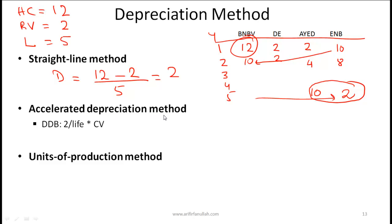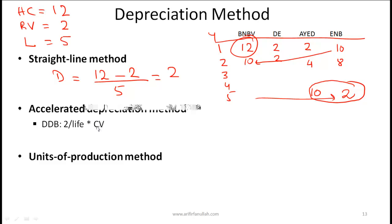Accelerated depreciation methods take more depreciation at the beginning of the asset's life. This method is allowed under tax rules. The one you need to know at Level 1 is the double-declining balance method. The formula is: (2 / life of the machine) × carrying value (net book value) at the start of the year.